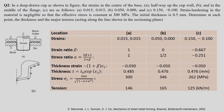Problem 2: deep drawing — cup deep drawing. The strains at three locations are given: at the center of the base A, halfway up the cup wall B, and in the middle of the flange C. The epsilon_1, epsilon_2 values are: for A: 0.015, 0.015; for B: 0.050, 0; for C: 0.15, minus 0.1. Strain hardening is negligible so effective stress is constant.